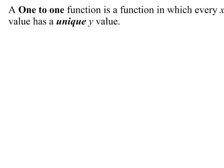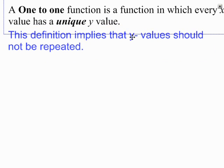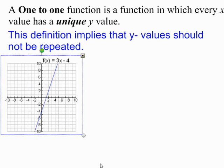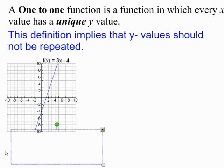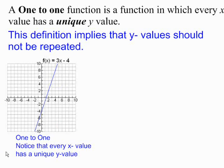So first, our definition for a one-to-one function. A one-to-one function is a function in which every x-value has a unique y-value. Keyword: unique y-value. This definition implies that y-values should not be repeated. For example, f(x) = 3x - 4. Notice that every x-value has a unique y-value; y-values are never repeated in the range.